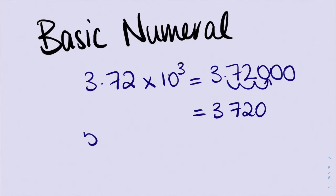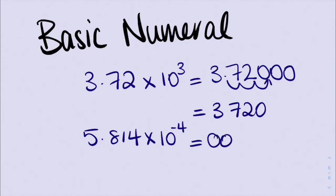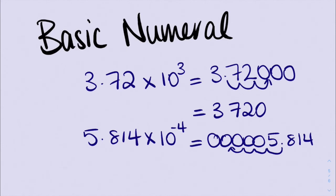If I have the number 5.814 times 10 to the power of negative 4, I'm going to put my extra zeros out the front because of that negative 4 — so a few zeros out there, then 5.814. Now that decimal place is going to move forward four places: 1, 2, 3, 4, and that's where my decimal place is going to end up. So I'm going to end up with 0.0005814. So 5.814 times 10 to the power of negative 4 equals 0.0005814.